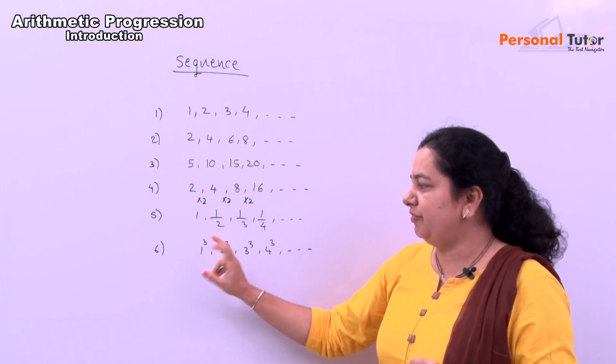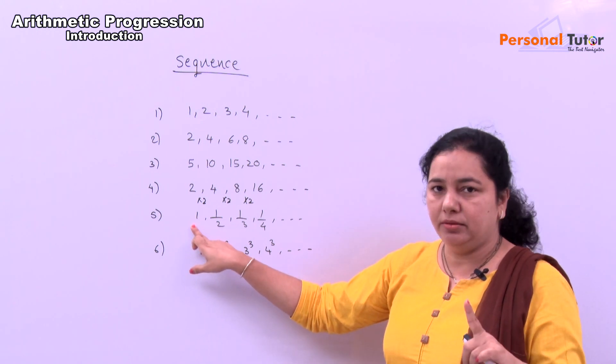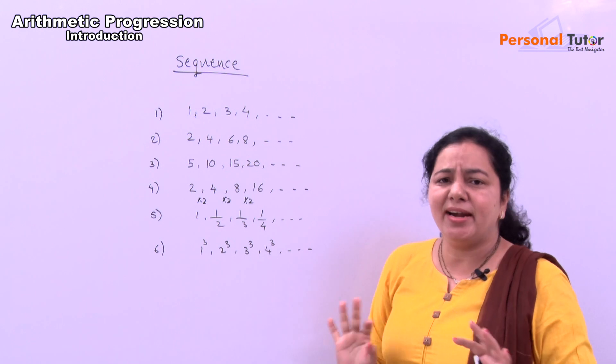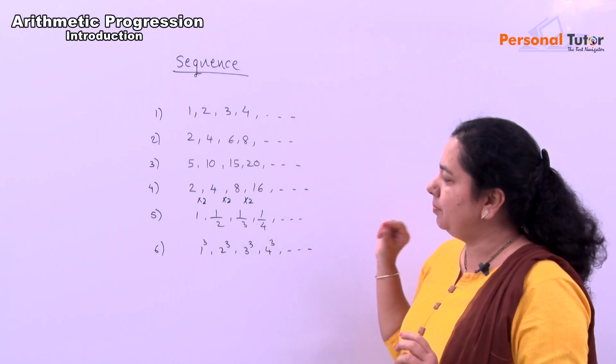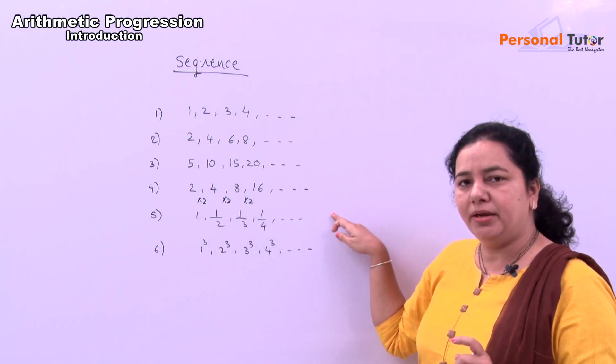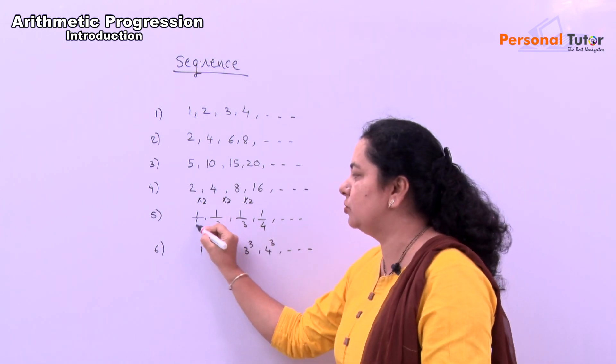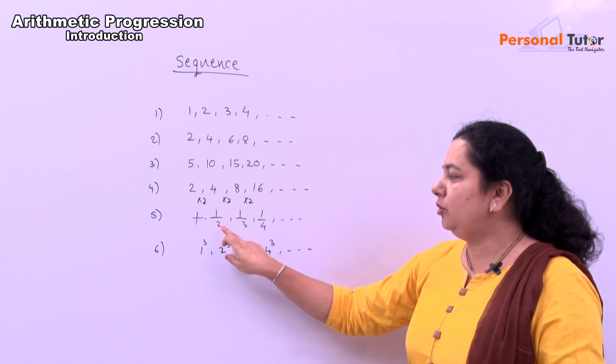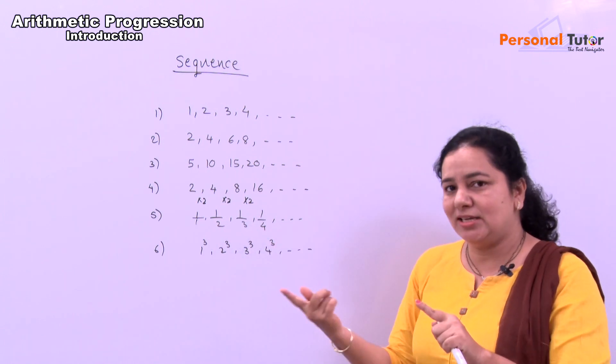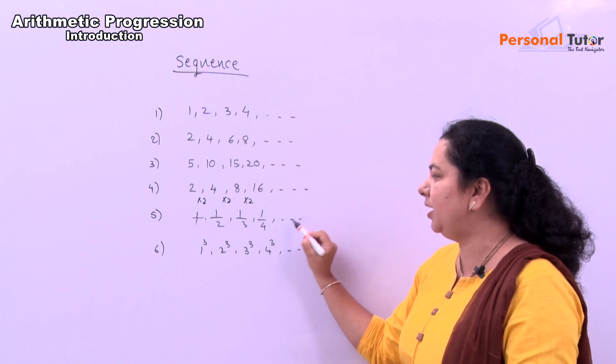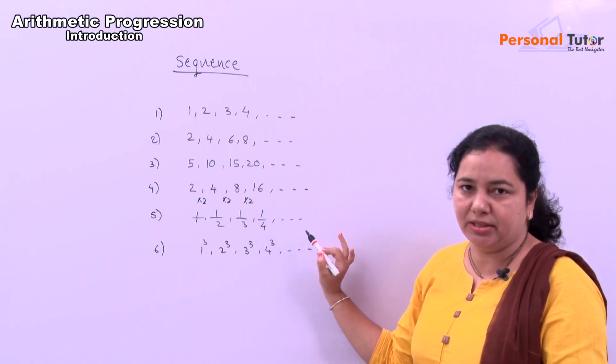And 5th and 6th. In fifth, here just 1, 1 by 2, 1 by 3, 1 by 4. Here nothing is added, subtracted, or multiplied. But if you look, here 1, 1, 1 is common and the denominator below. Here 1, you can write down 1 by 1 also. Therefore, this is 1, 2, 3, 4. Then you can easily say that next number is 1 by 5. Here it is 1 by 5, 1 by 6, 1 by 7. Like this.